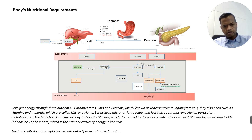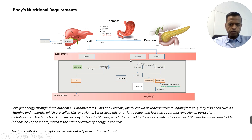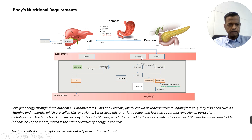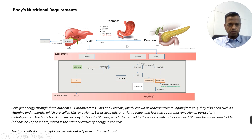However, human cells cannot consume glucose on their own. Human cells can only open up for glucose when it is combined with a hormone called insulin. And hence, when we get food through our bloodstream, it is already combined between glucose and insulin and kept ready for ingestion. This process of combination of glucose and insulin is done upstream by the liver, which converts carbohydrates into glucose and combines it with insulin that is created in the pancreas, and then transmits that combination into the bloodstream.